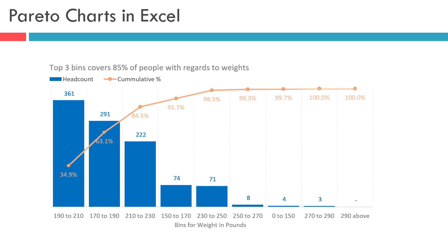The chart shown on the screen is created for the weights measured in pounds for 1000-plus survey respondents. Weight bins were then created and the number of individuals whose weights fall within those bin ranges were counted. This is exactly similar to the counting we did for creating our histogram chart in previous videos. These bins were then sorted in descending order of headcounts and the cumulative percentage of each bin to the total headcount was calculated. This data was then presented using a column and line chart.